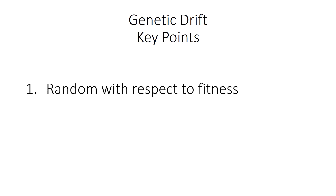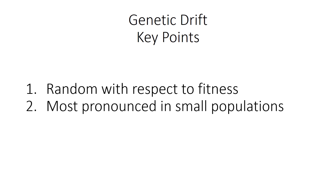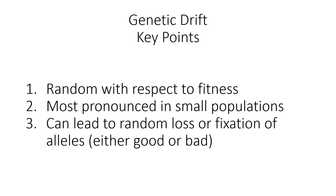There are a couple of key points about genetic drift. First, it's random — random with respect to fitness. This is unlike natural selection, which leads to an increase in fitness in a population. Genetic drift is totally random and it's most pronounced in small populations. This is a big deal in conservation biology, where we're often dealing with small populations facing genetic drift. Genetic drift can lead to random loss or fixation of alleles, which can be good or bad. Randomly losing a deleterious allele is good, but if a harmful allele becomes fixed — the only allele in a population — that's bad.